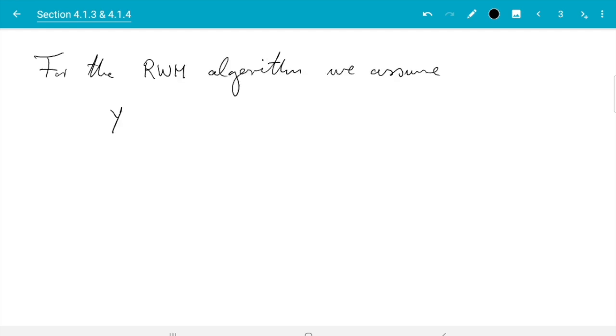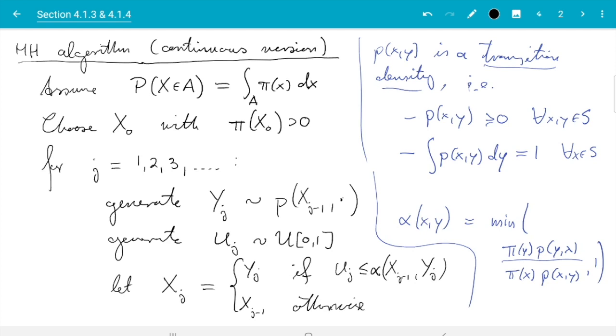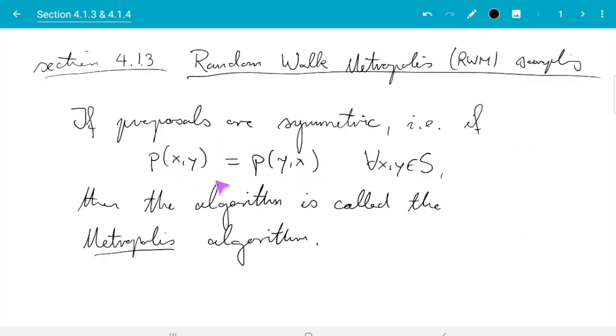We assume that the proposal yj is computed as the previous state plus some increment epsilon j. Where the distribution of epsilon j is symmetric. And in this case it just means epsilon j and minus epsilon j have the same distribution. And that is assumed to make this condition true.